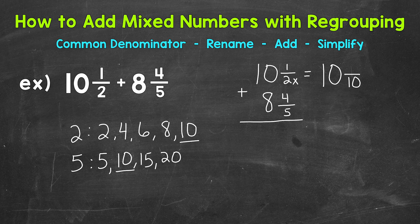So we need to think, how do we get 2 to equal 10? Well, 2 times 5 equals 10. Whatever we do to the bottom, we must do to the top in order to keep this equivalent. So 1 times 5 equals 5. 10 and 5 tenths is equivalent to 10 and a half. But now we have that common denominator of 10.